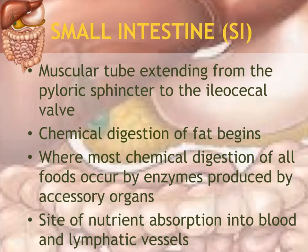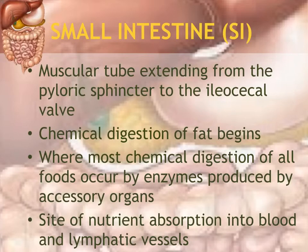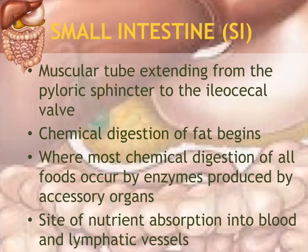The majority of chemical digestion occurs in the small intestine. All digestion of carbohydrates including starch, protein, and lipids finishes in the small intestine. It is also the site of nutrient absorption into the blood and the lymphatic vessels.